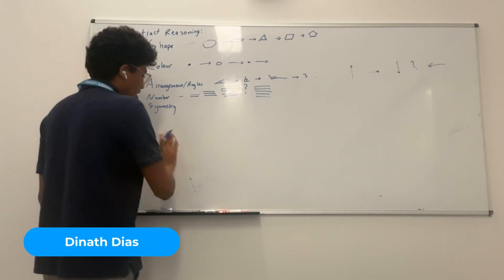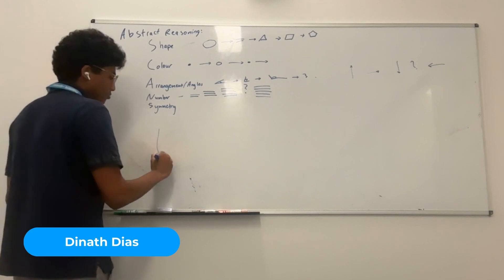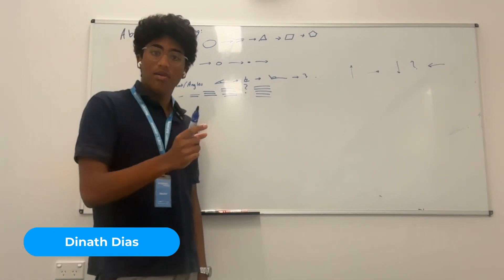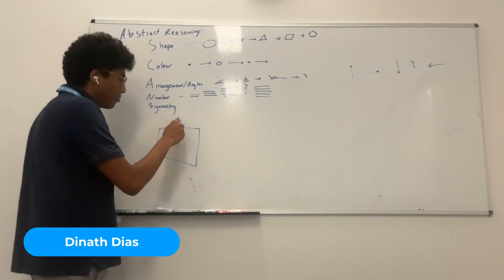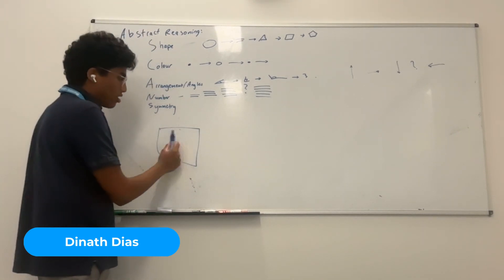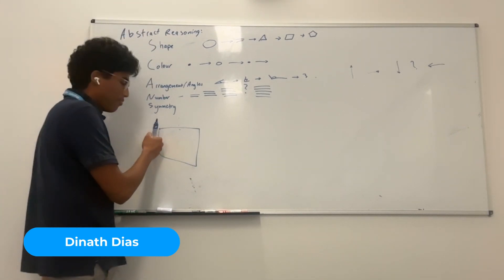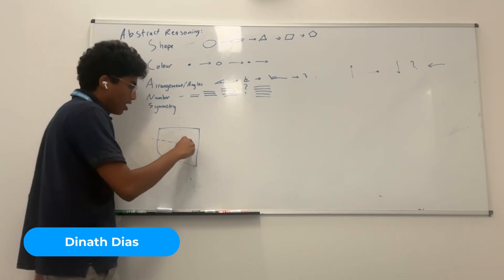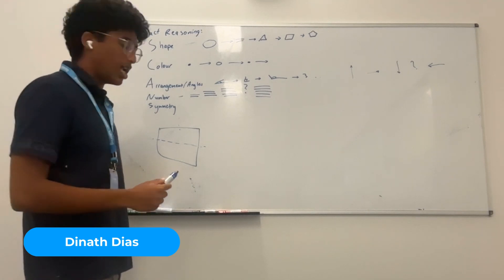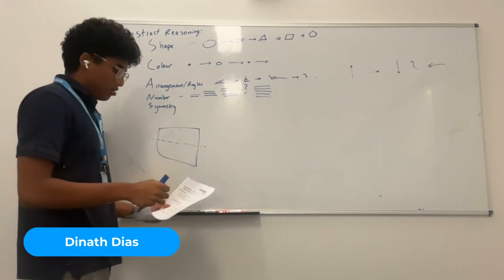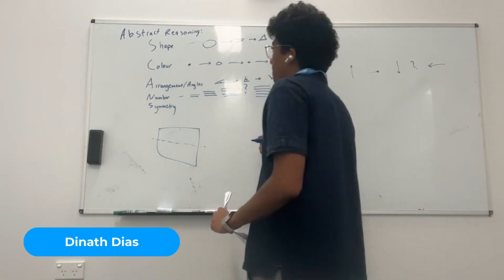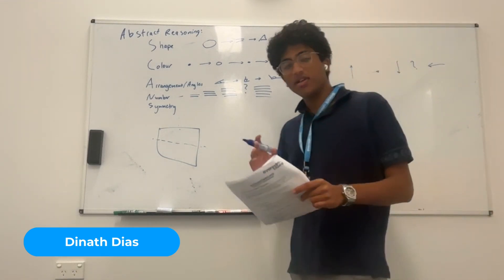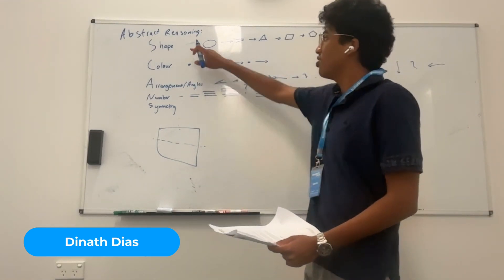Finally, we have symmetry. Symmetry basically means if you flip a shape over a line, it will be the exact same. For example, if I flip a square over a vertical line it will still be the same, or over a horizontal line it will still be the same. That's symmetry. Everest will teach you more patterns, but for now remember SCANS.